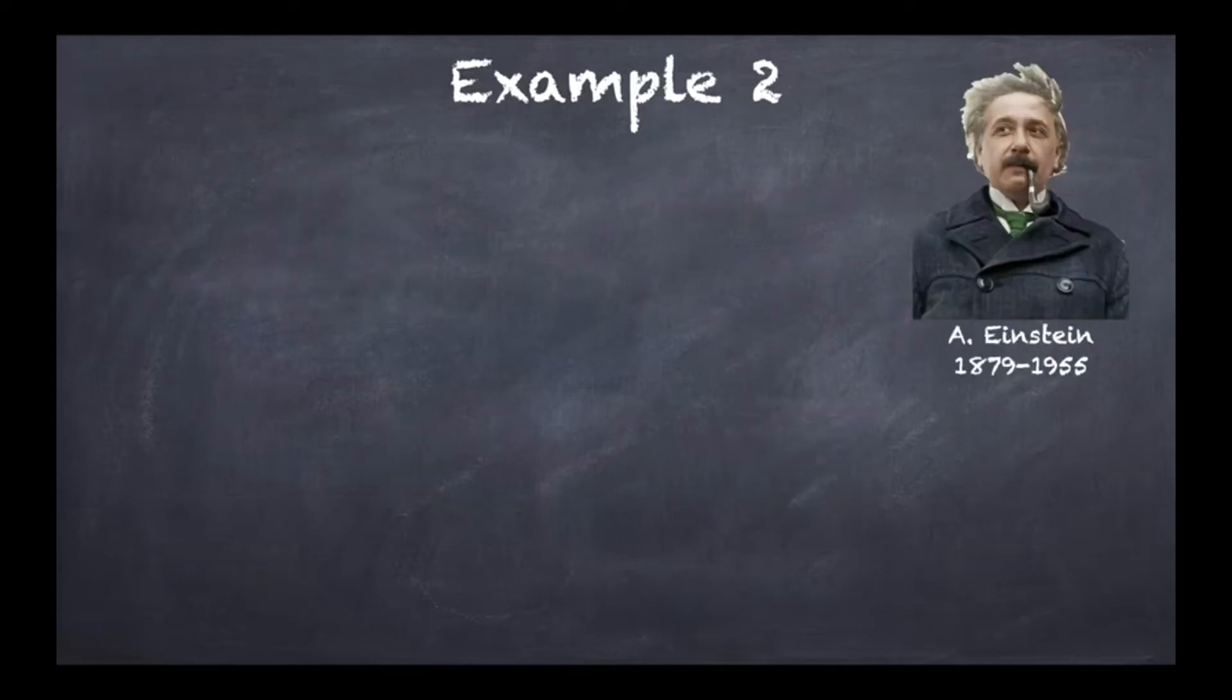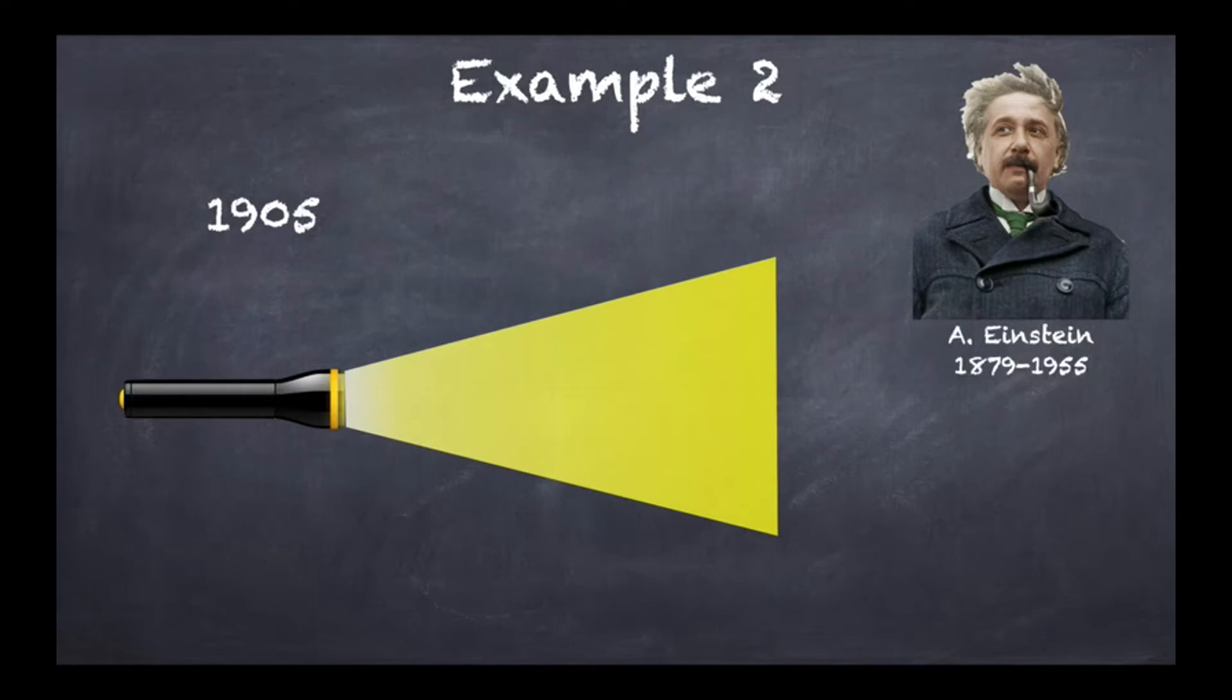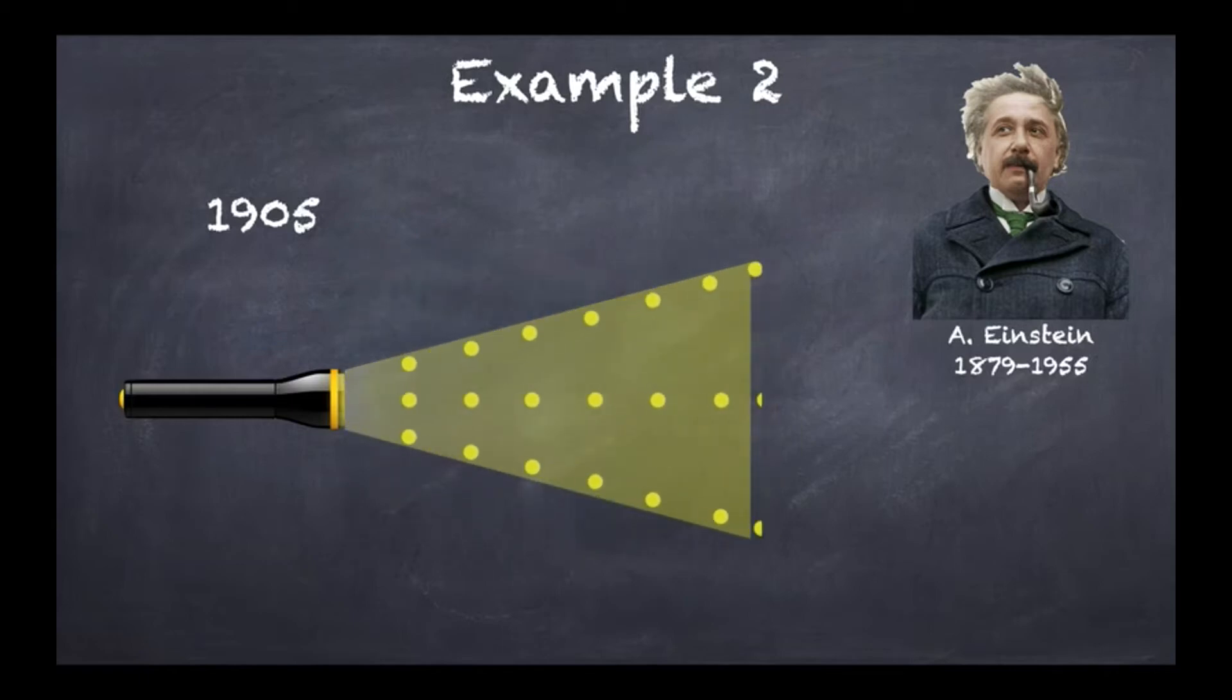Now let's have a go at example number two. This example concerns Albert Einstein and one of the papers that he published in 1905. If you take a light torch and you simply switch it on, then you're going to have some light shining from it. What Albert Einstein proposed in this paper of 1905 was that in fact this light was made of particles.